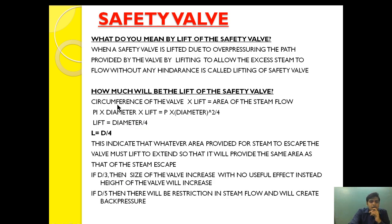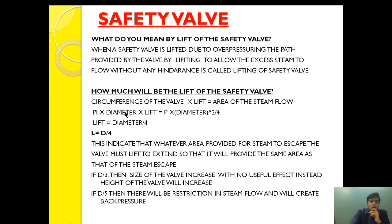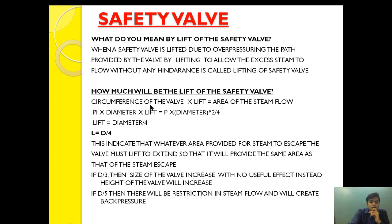The first formula is: circumference of the valve multiplied by the lift equals the area of the steam flow. The valve sits on the circumference of the flow area, and lift is denoted as L. Circumference of the valve multiplied by lift equals the area of the steam flow. Now substituting: circumference of the valve is π × diameter (i.e., 2πr), so 2πr × L equals the steam flow area.